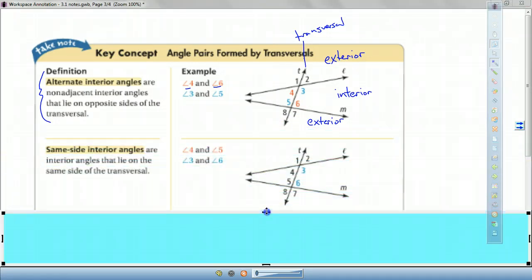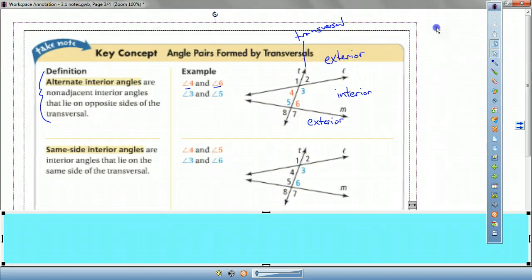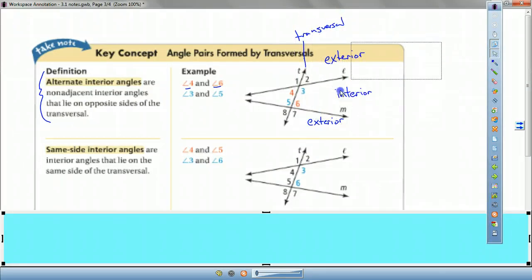If we're looking at same side interior angles, again, same rules apply as up above. This is still my interior, everywhere in here. So if I'm on the same side, it means I don't have to jump over a line to get to the other one. So if I'm looking at 4, my angle that's on the same side interior is going to be 5. Because I don't have to jump over anything. They're right next to each other. For 3, my same side interior angle is going to be 6. Because they're right next to each other. I don't have to jump over a line.